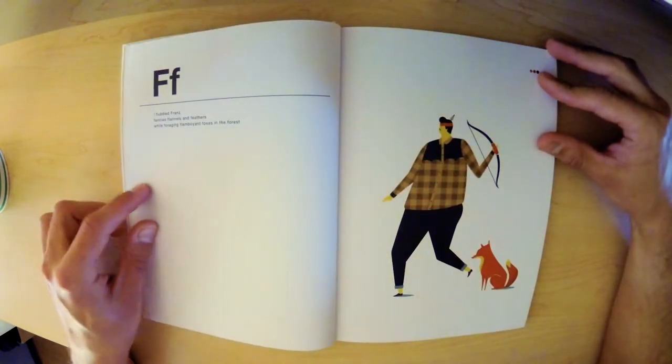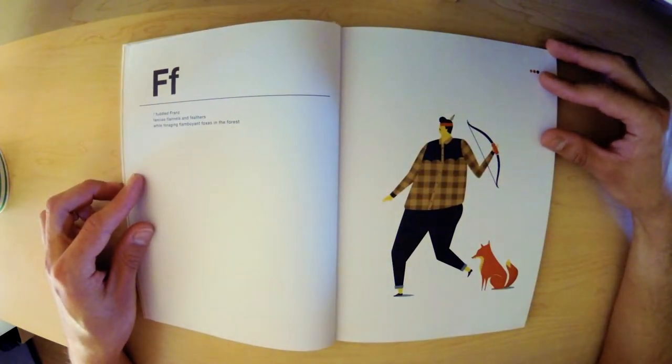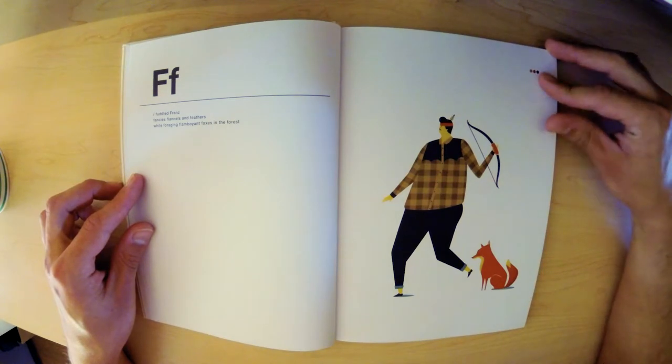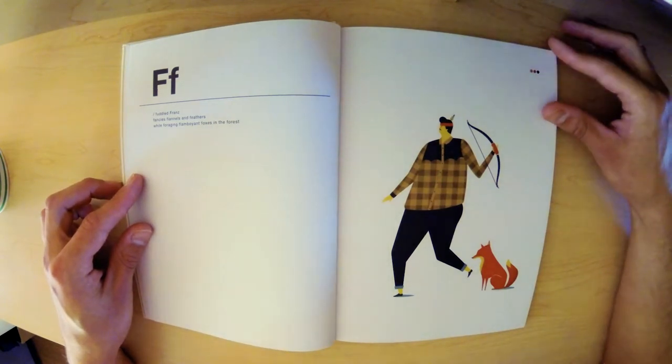F. Fuddled Fronds fancies flannels and feathers while foraging flamboyant foxes in the forest.